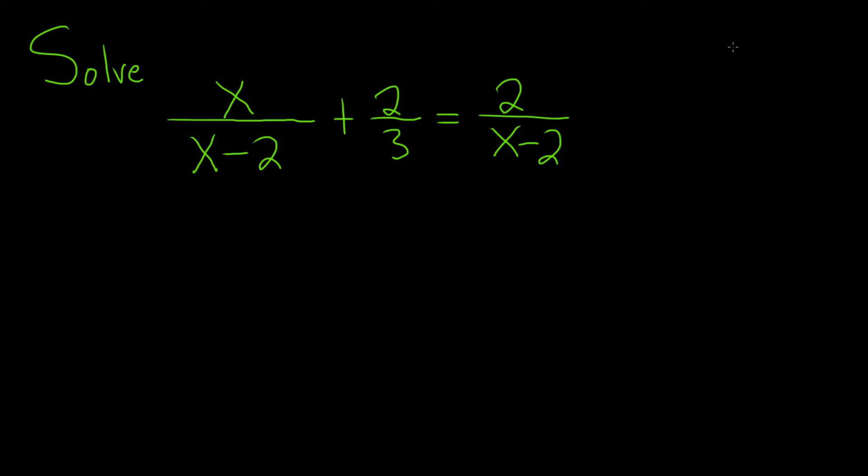In order to get rid of the x minus 2, we'll have to multiply both sides by x minus 2. And in order to get rid of the 3, we'll also have to multiply both sides by 3. So we can multiply both sides by 3 times x minus 2, and that will clear all of the fractions.